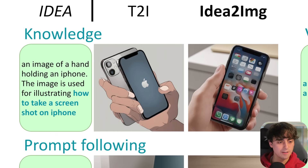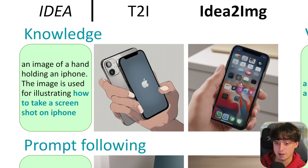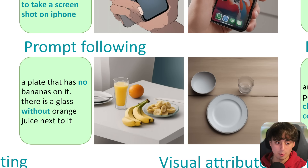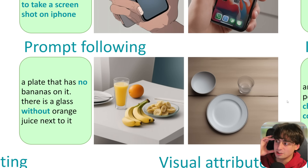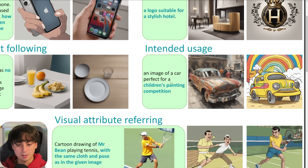Next up, an image of a hand holding an iPhone — the image is used for illustrating how to take a screenshot on an iPhone. The base text-to-image gives us a really gross, wiki-how messed-up image, while Idea2Image gives us a much better result. Prompt following also massively improves. A plate that has no bananas on it and a glass without orange juice next to it — this kind of tricks the base text-to-image because it sees those words in the prompt and just adds them in, but Idea2Image has intelligent understanding and can account for this. We're asking for a logo here — the base model is not giving us a logo, but this one actually does. And an image of a car perfect for a children's painting competition — this is quite a lot better for that specific application.